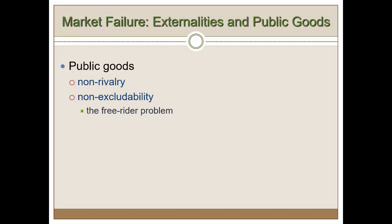The free rider problem creates something called the tragedy of the commons, which will be explained in the next video. So that was a short video on public goods and the externalities that public goods create. See you in the next video.